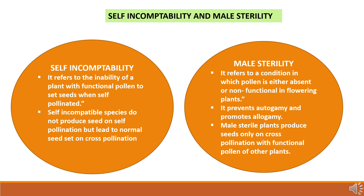Here we study the difference between self-incompatibility and male sterility. Self-incompatibility is the condition of inability of a plant to set seeds with functional pollen grains after self-pollination, whereas male sterility refers to the absence of pollen or presence of non-functional pollen grains. In both cases, self-incompatibility and male sterility prevent self-pollination and promote cross-pollination, and in both cases cross-pollination leads to seed setting. Self-incompatible plant species do not produce seeds on self-pollination but have normal seed set when pollinated with other plants. Male sterility also produces seeds only on cross-pollination with functional pollen of other plants.